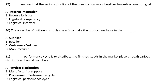DASH Performance Cycle is to distribute the finished goods in the marketplace through various distribution channel members — Option A: Physical Distribution, Option B: Manufacturing Support, Option C: Procurement Performance Cycle, Option D: Logistical Performance Cycle. The correct answer is Option A: Physical Distribution Performance Cycle.